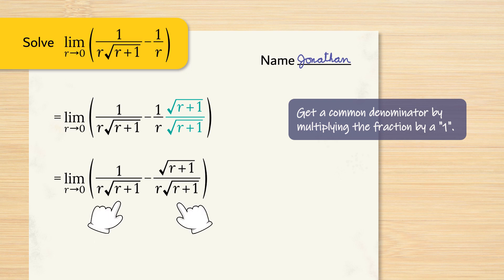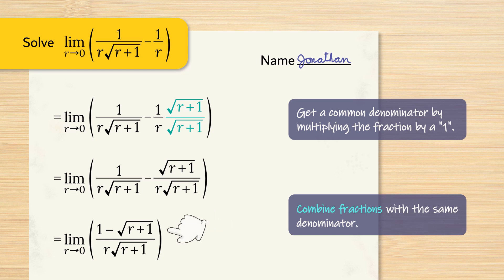These fractions now have the same denominator. We can combine these two fractions together now. In the numerator we have 1 minus the square root of r plus 1 and in the denominator we have r multiplied by the square root of r plus 1.